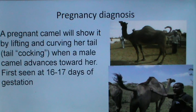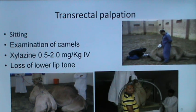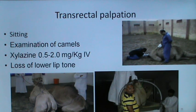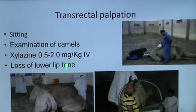Transrectal palpation can be performed in camels in a sitting position with both hind and forelegs tied separately. At some places, dromedary camels can be placed in a specially built travis and palpated in a standing position. For examination, xylazine at a dose rate of 0.5 to 2 mg per kg is administered intravenously to calm the camel, evidenced by loss of lower lip tone.